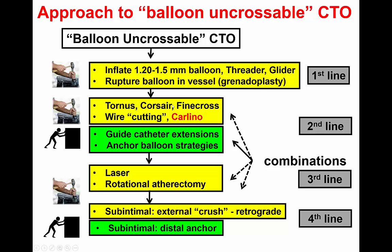The next step is to use different microcatheters — like the Corsair or the FineCross — or potentially perform the Carlino technique, which is injection of contrast through the microcatheter, or improve guide catheter support using a GuideLiner or another guide catheter extension such as Godzilla, or an Anchor Balloon strategy. The third line is to use the laser, which does not require changing the wire, in contrast to rotational atherectomy. The last line is to go subintimally and modify the lesion from the subintimal space or use subintimal distal anchoring.